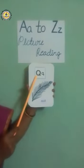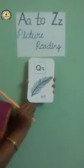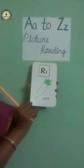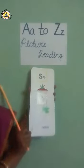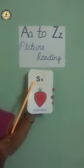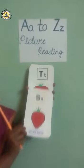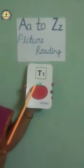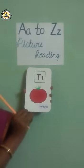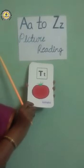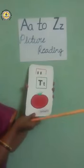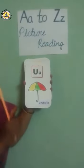Q. Q for quill. R. R for radish. S. S for strawberry. T. T for tomato. U. U for umbrella.